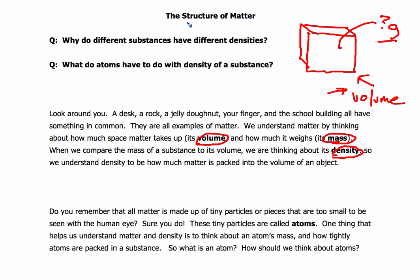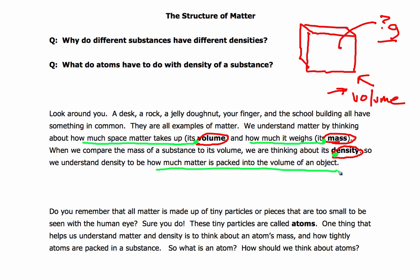Pick up your green marker or green colored pencil. Let's look at where the description of what volume is — of course, it's how much space matter takes up — and you're going to put a little link bullet there. What about mass? Mass is how much the matter weighs. And when we're thinking about density, density is how much matter can be packed into a given volume of a substance. We're going to link those right there.